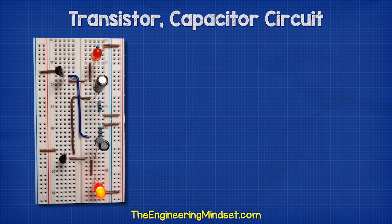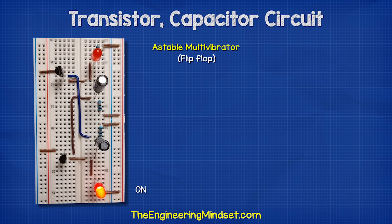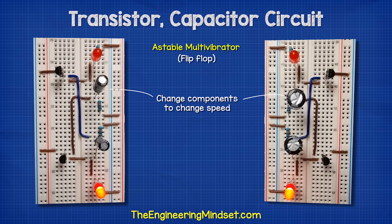This circuit is based on something called an astable multivibrator, or a flip-flop. A flip-flop circuit simply turns the LEDs on and off alternatively. We can change how fast this occurs by changing the components.